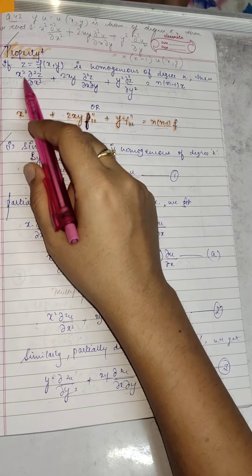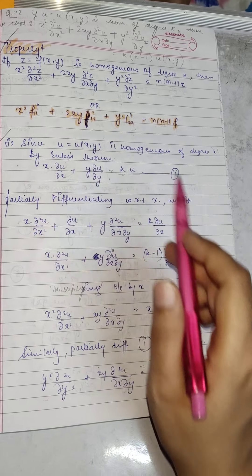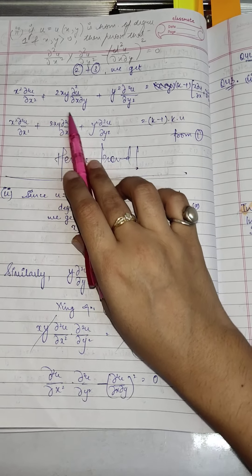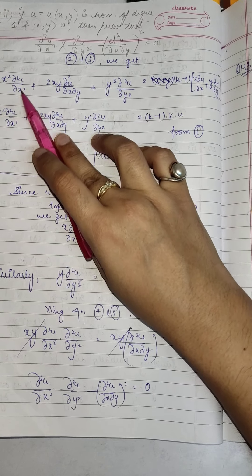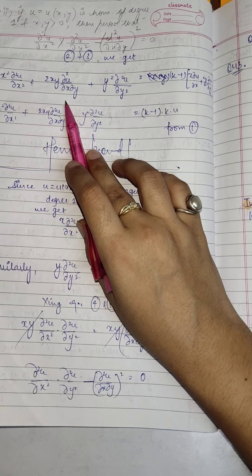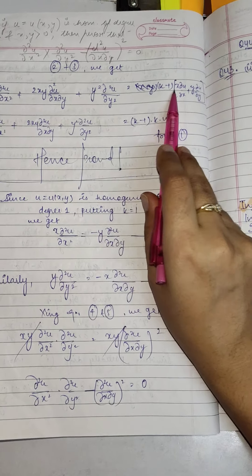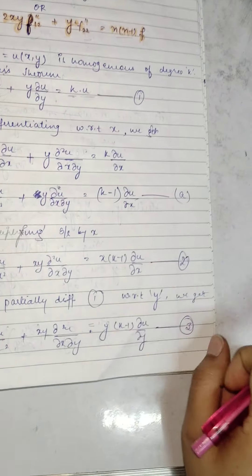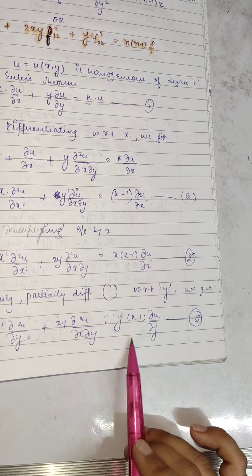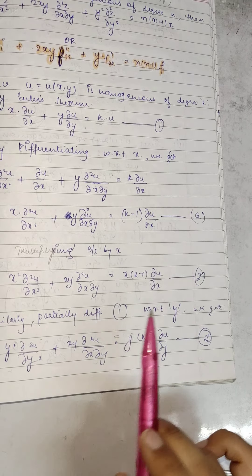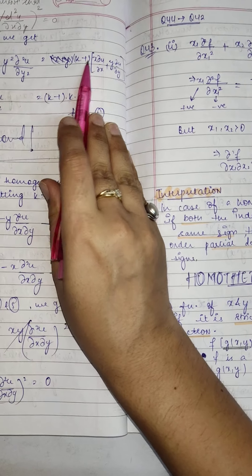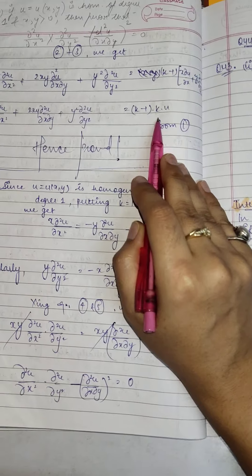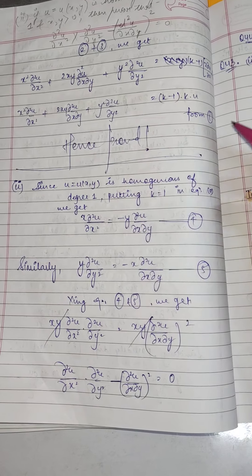Now adding equations 2 and 3 together gives the final result we've been working toward: x² · ∂²u/∂x² + 2xy · ∂²u/∂x∂y + y² · ∂²u/∂y² = (k−1) · [x · ∂u/∂x + y · ∂u/∂y]. The bracket is nothing but k·u from equation 1, so this equals k(k−1)·u, and we have proved the required property.